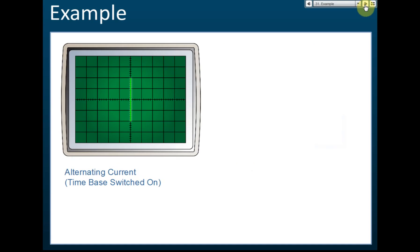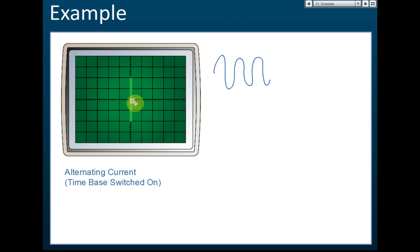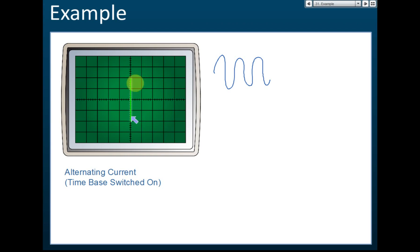Now for alternating currents — the voltage moves up and down. If the voltage goes up and down, the bright spot on the screen will also follow it, moving up and then down repeatedly. However, it moves very fast because the frequency of alternating current is 50 Hz. That means it moves up and down 50 times in one second, so you cannot see the individual movement.